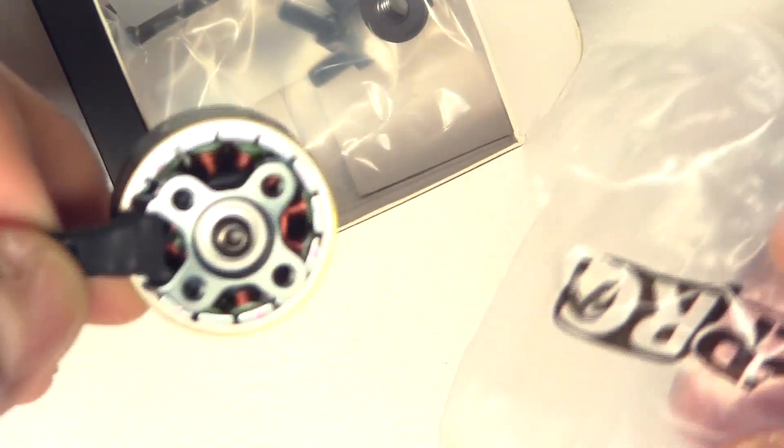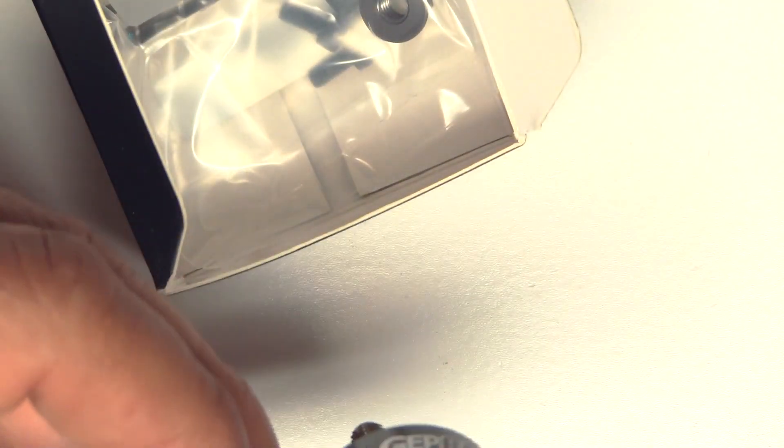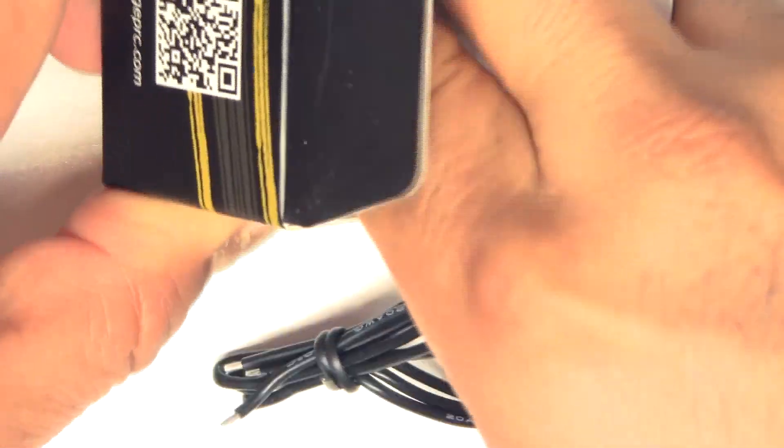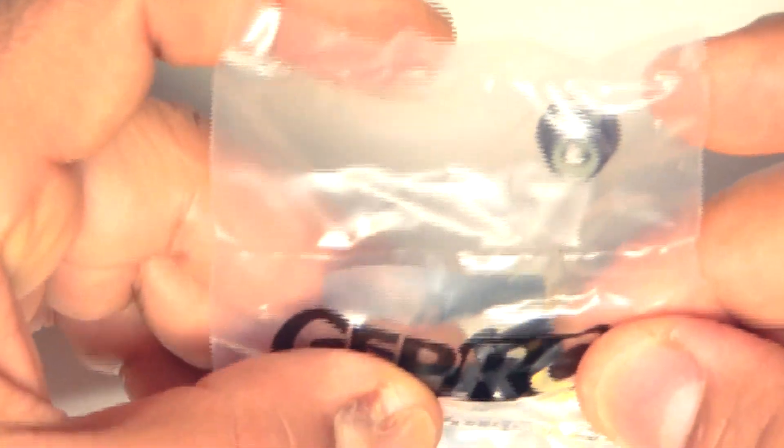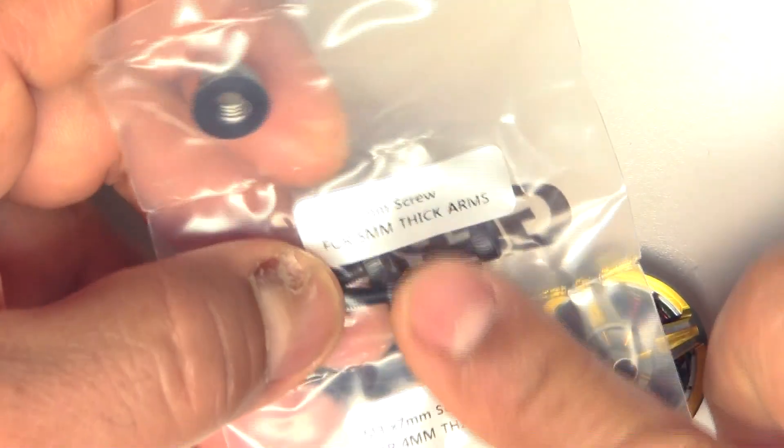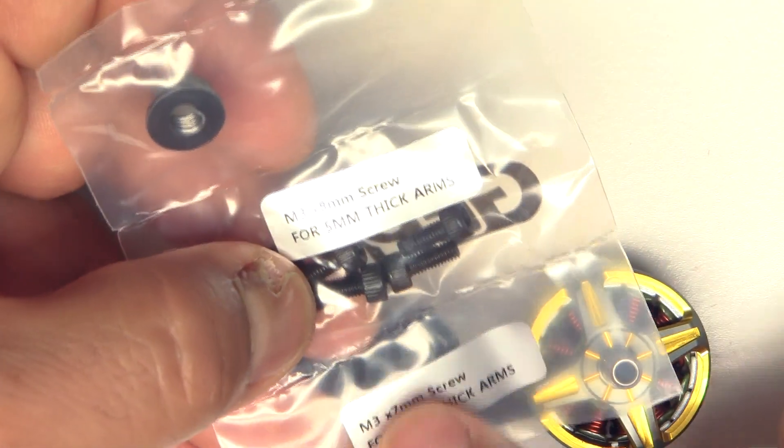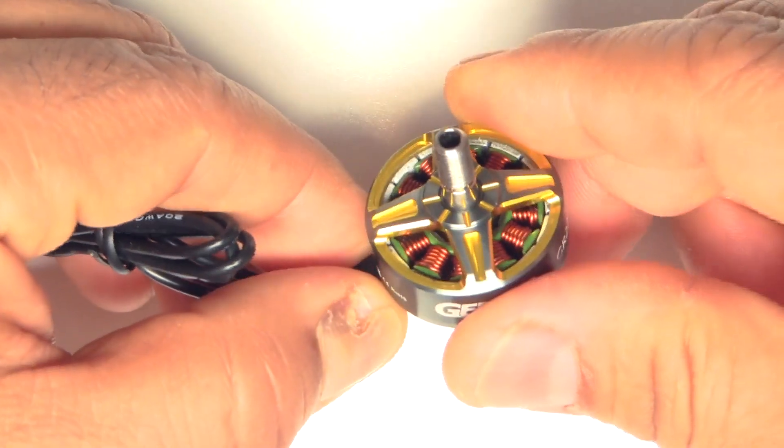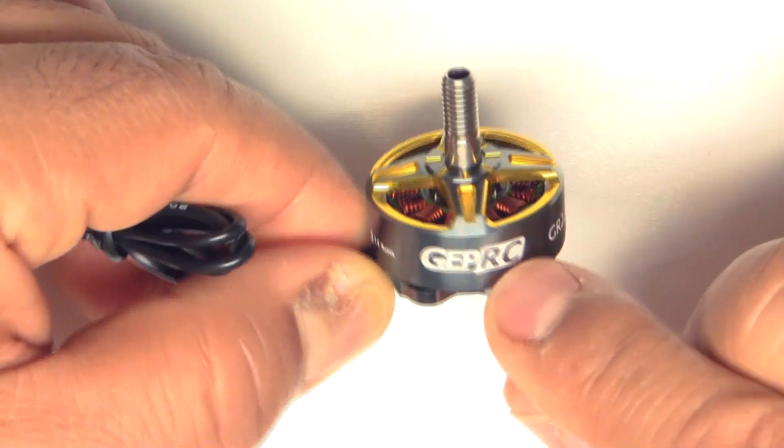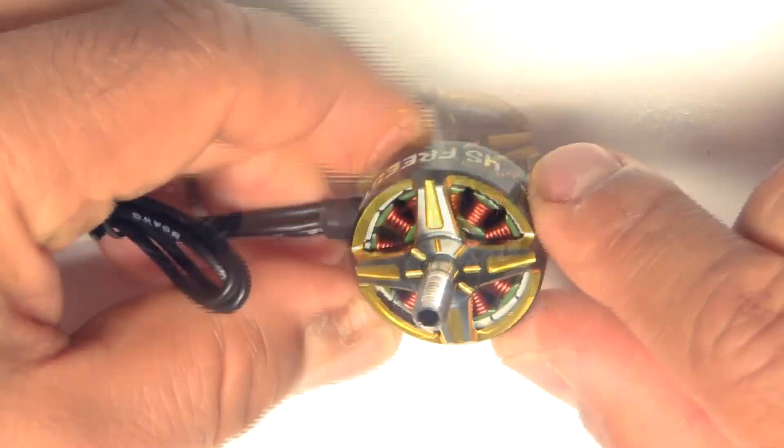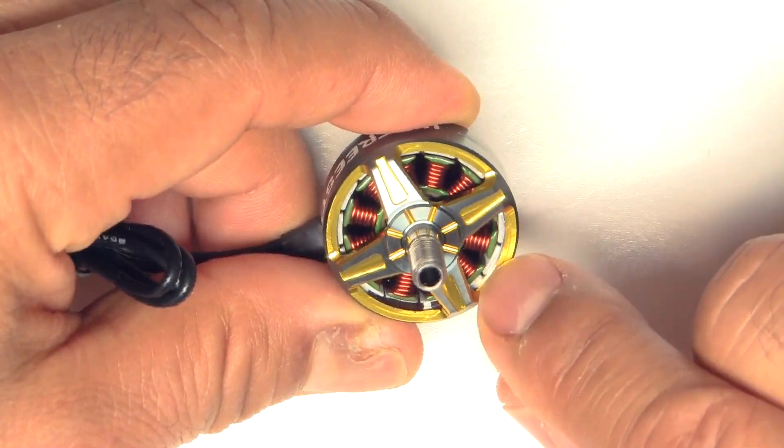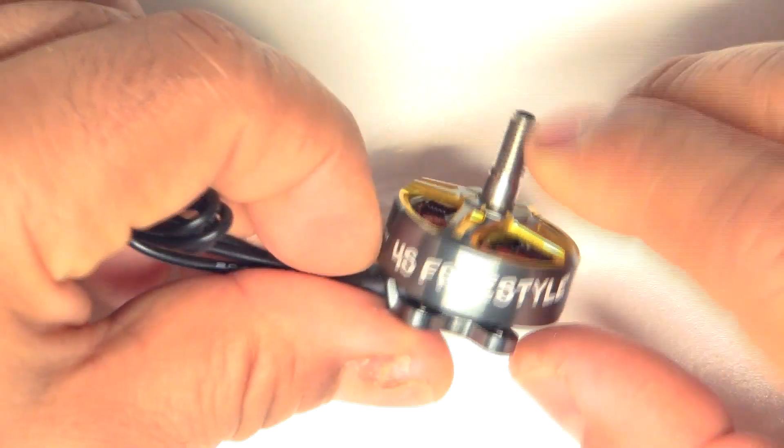Comes in the standard box, well packaged in a bag. They include the usual prop nut and some mounting screws which are nicely labeled for 5 and 4mm thick arms, 7mm and 8mm. So here's the motor, nice color scheme. It's kind of like a gunmetal titanium color with sort of gold yellowish accent. Cool looking.